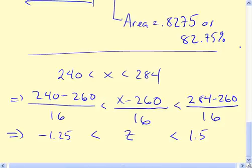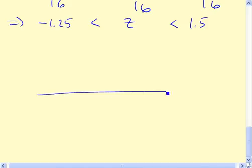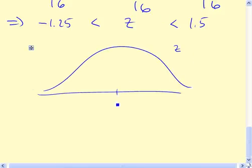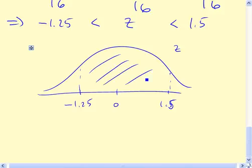So the area we're going to be interested in now is standard normal, so this is now z, centered at zero, and we want the area between minus 1.25 and 1.5. My 5 is getting a little sloppy there. So this area right here will also be equal to the proportion of pregnancies that are between 240 and 284 days.